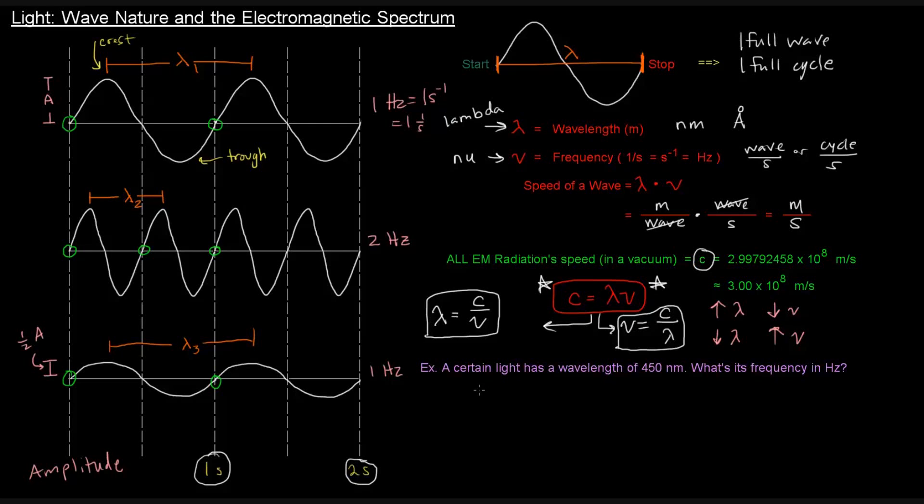So this example problem says a certain light has a wavelength of 450 nanometers. What's its frequency in hertz? So what's its frequency? Frequency is nu. So I'm going to use the equation that's solved for nu. So it's going to be nu equals C over lambda.